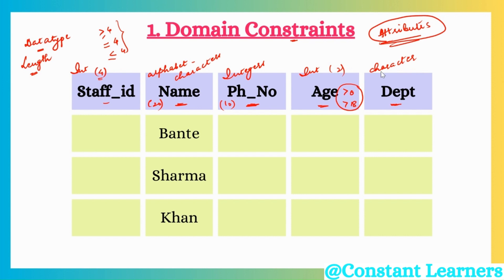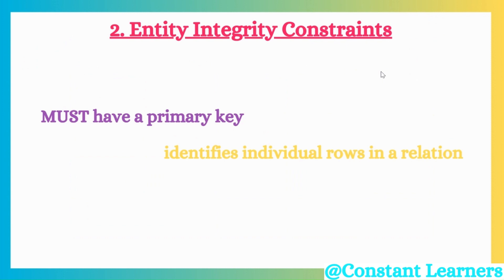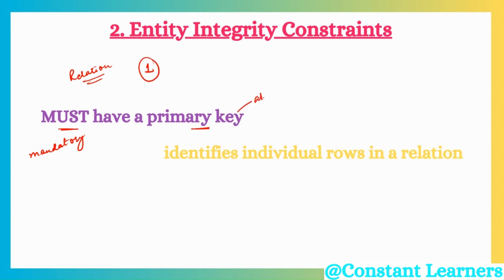The second type of integrity constraint is entity integrity constraints. Entity integrity constraints state that every relation — meaning every table in a relational database — must have a primary key. It is mandatory and compulsory that every relation must have one primary key. A primary key is an attribute or column that helps us identify individual rows in a relation.